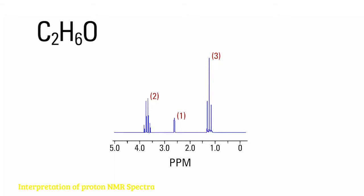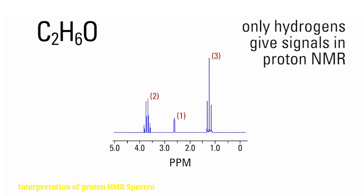According to the molecular formula, this compound has two carbons, six hydrogens, and one oxygen. Only hydrogens give signals in proton NMR, so the fact that we see three groups of signals indicates that we have three different kinds of hydrogens.